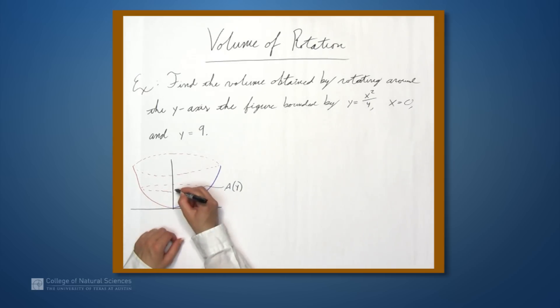So this radius here is x. So if we're rotating around the y-axis, and we're given this function y equals x squared over 4, the first thing we're going to need is x in terms of y.